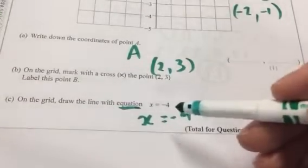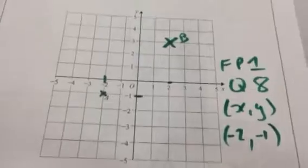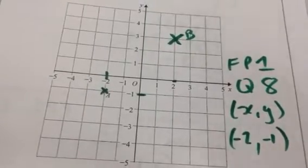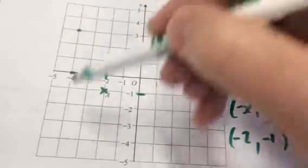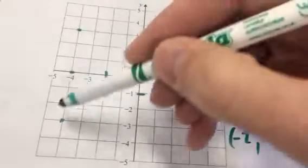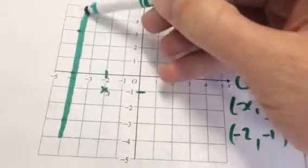But here, if it just says x equal to minus 4, then you've got to realize that x is minus 4 whatever y is. So x is minus 4 there, x is minus 4 there, x is minus 4 there. So x is always minus 4.